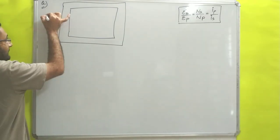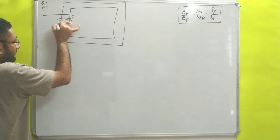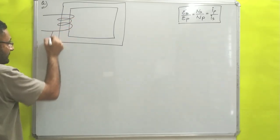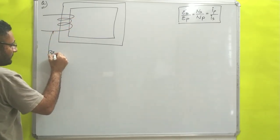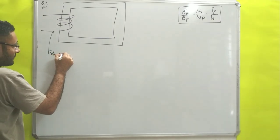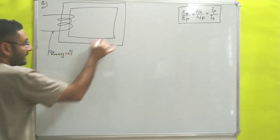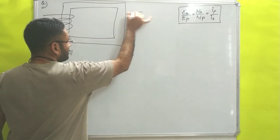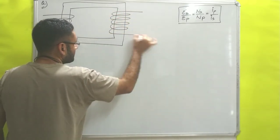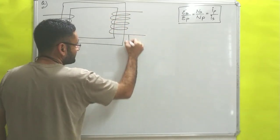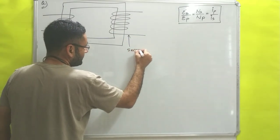Over here there will be the primary coil, and on the other side that will be the secondary coil.